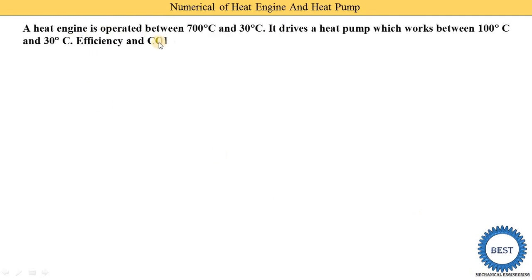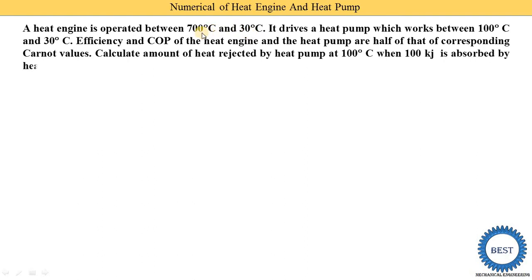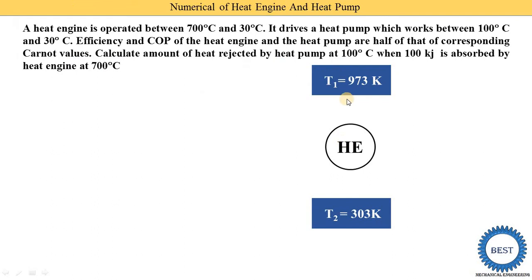A heat engine is operated between 700 degree centigrade and 30 degree centigrade. The source and sink temperatures T1 and T2 are given. We convert these to Kelvin: 700 + 273 = 973 Kelvin, and 30 + 273 = 303 Kelvin.